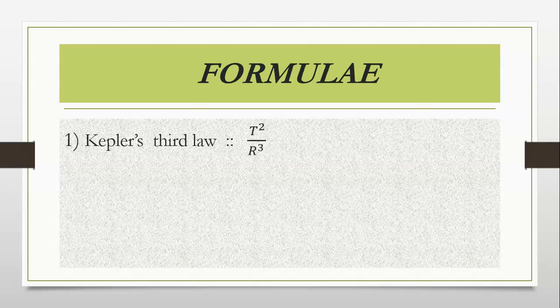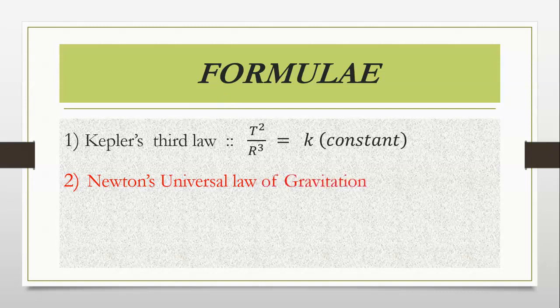Kepler's third law: T² upon R³ is equal to a constant K. Newton's universal law of gravitation: F is equal to G into M₁ into M₂ upon D square. Centripetal force: F is equal to MV² upon R.